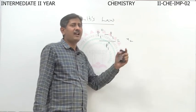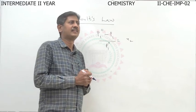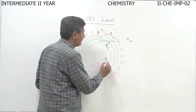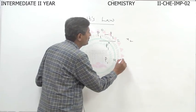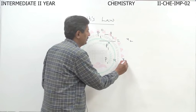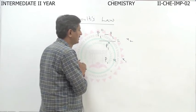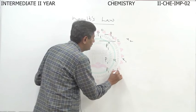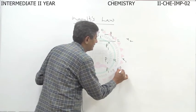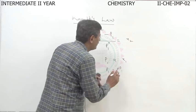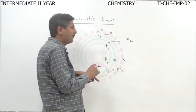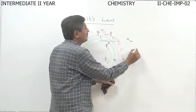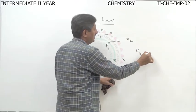Raoult's law can also be defined as: the partial pressure of a component of any solution is directly proportional to its mole fraction in the solution. This is given by P1 = P1° × X1. Comparing with Henry's law, the Henry's constant KH is approximately equal to P1°.